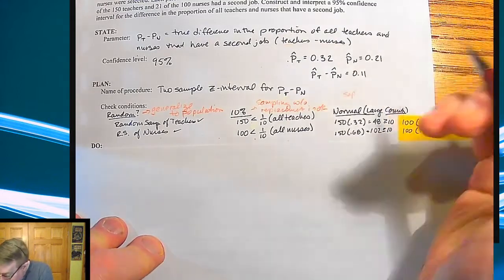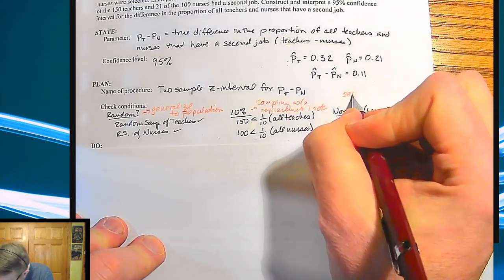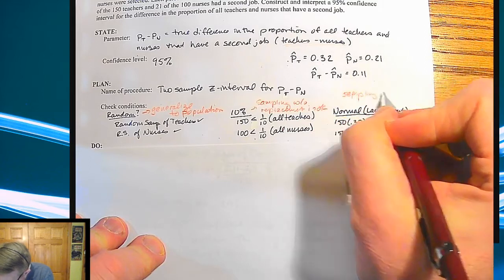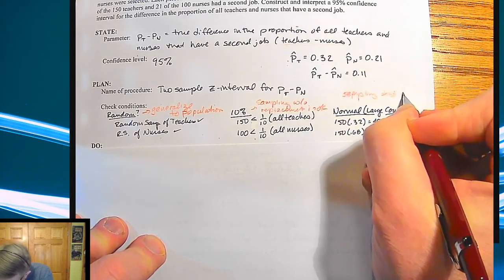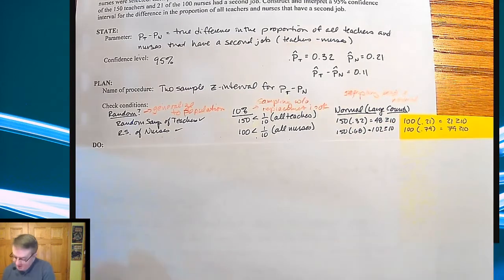And then this last part over here is that means our sampling distribution is approximately normal. And I'm going to trust that you can read all of that. So I'm not going to necessarily spell it all out.